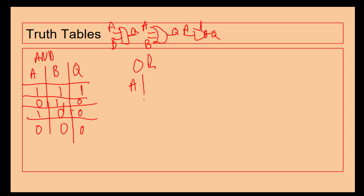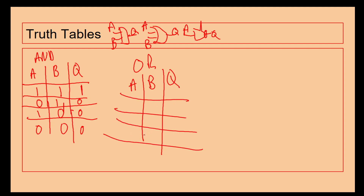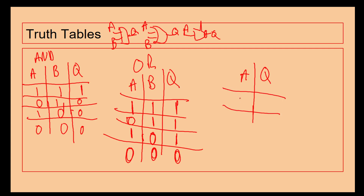With an OR gate, which again has two inputs A and B and an output Q: if we have 1 or 1 coming in, Q is 1. If we have 0 or 1, we still get 1. If we've got 1 or 0 we get 1. But if we've got 0 OR 0, that gives us 0. So with an OR gate, if one of the inputs is set to 1, we'll get a 1. With a NOT gate, which has only one input and one output, it flips the value — a 1 coming in gives a 0 coming out, and a 0 coming in gives a 1 coming out. These are three pieces of logic that you need to know and be happy with.